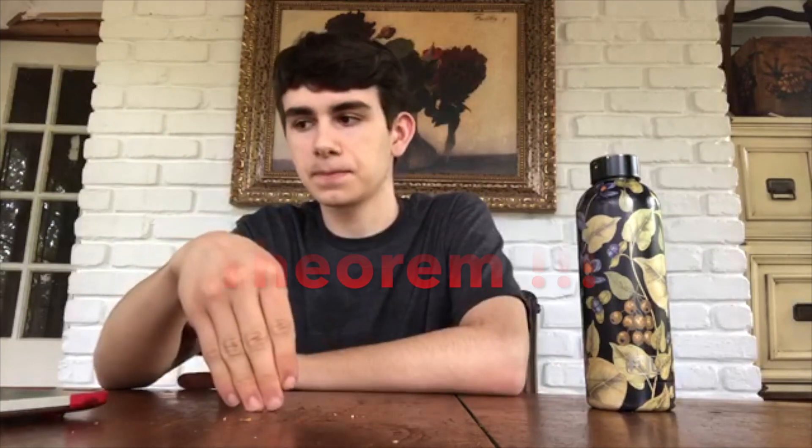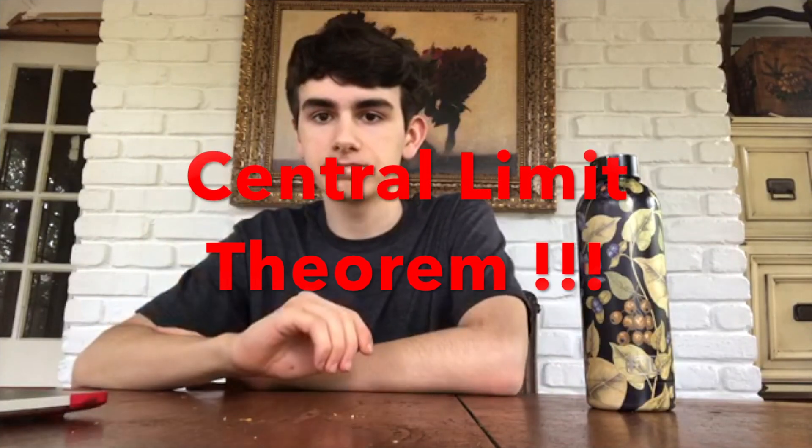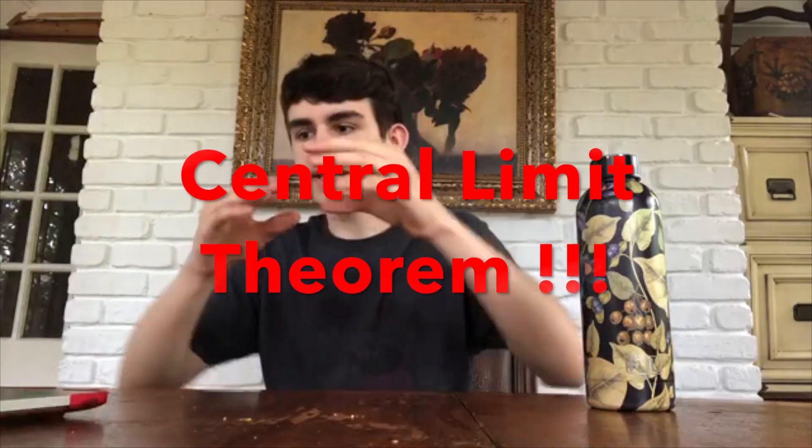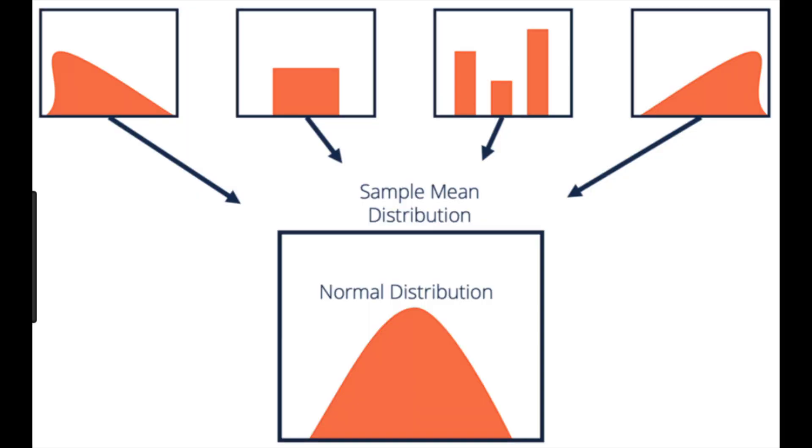A sampling distribution is the distribution of a statistic, like a mean or proportion, with repeated sampling. The central limit theorem, very important, tells us that the sampling distribution of sample means for pretty much any distribution with a sample size greater than 30 will be approximately normal, which is pretty awesome and super important. This seems like a lot of information, but it will become second nature with enough studying.